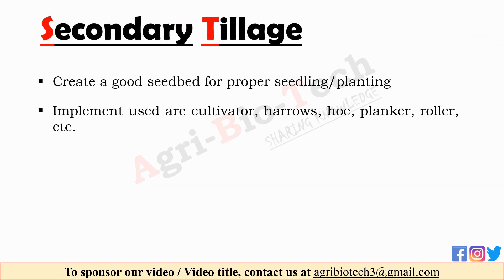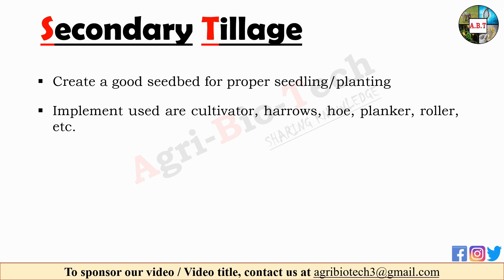The second type is secondary tillage. These tillage operations follow primary tillage to create a good seedbed for proper seedling and planting. Secondary tillage implements include cultivator, harrow, planker, roller, etc.